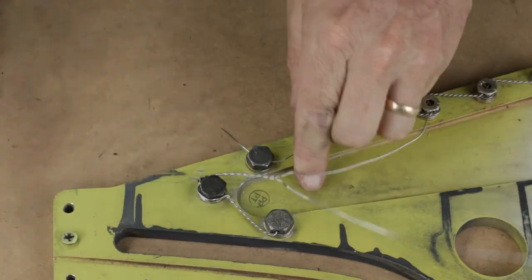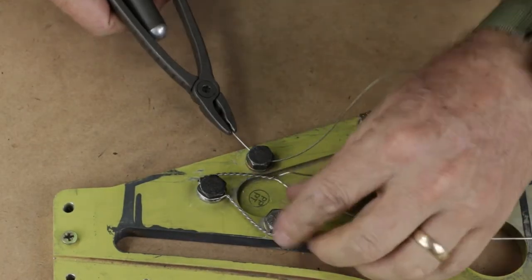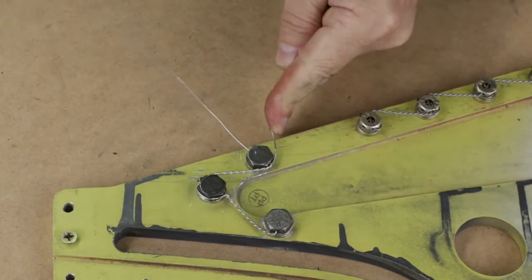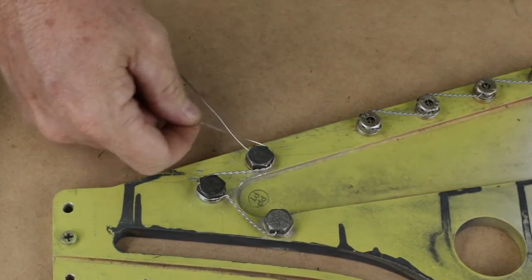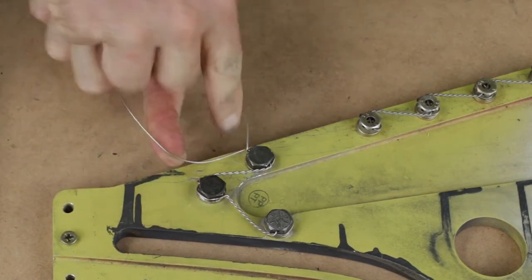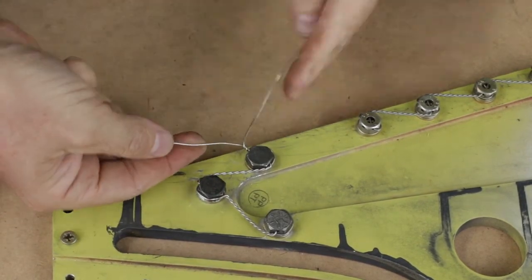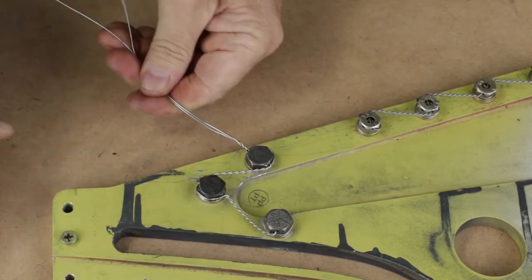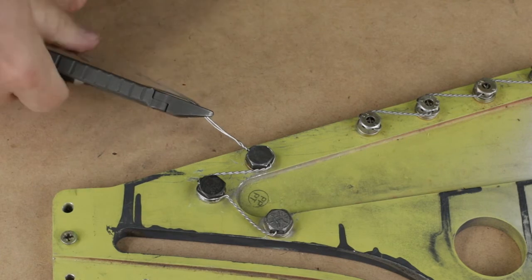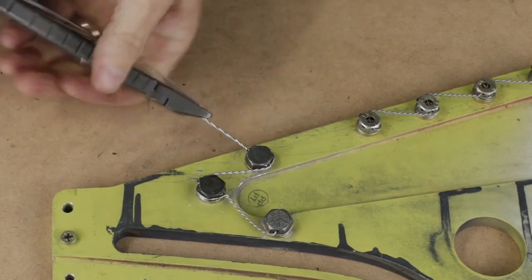So we thread it through, pull it tight, bring the wire around the back of the bolt head. Do a couple of turns to start us off. We finish off normally with about an inch and a half of wire. So we tighten that up.